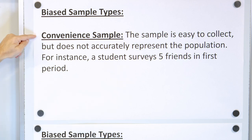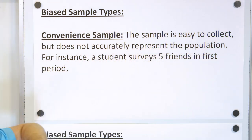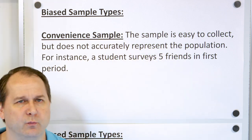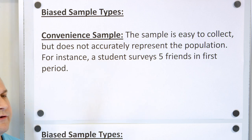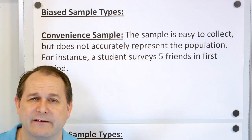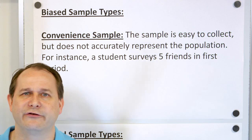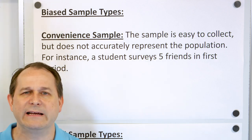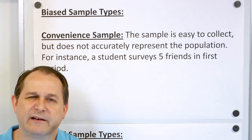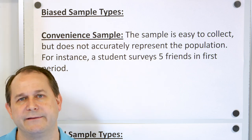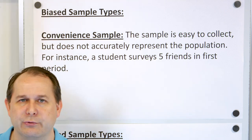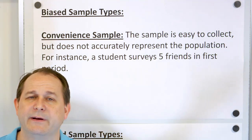The first is a convenience sample. It means the sample is easy to collect but does not accurately represent the population. For example, if a student surveys five friends in first period — that's a convenient sample because it was easy to ask your friends, but it's not representative of the school. If the data is a little too convenient to get, it's probably biased. You want to do a true random sampling, which takes more work.